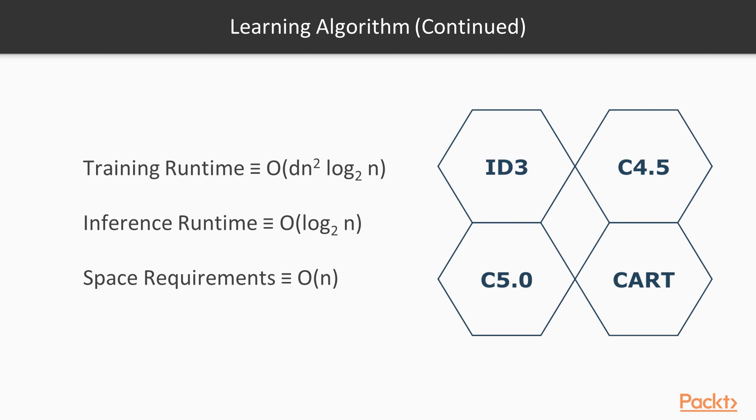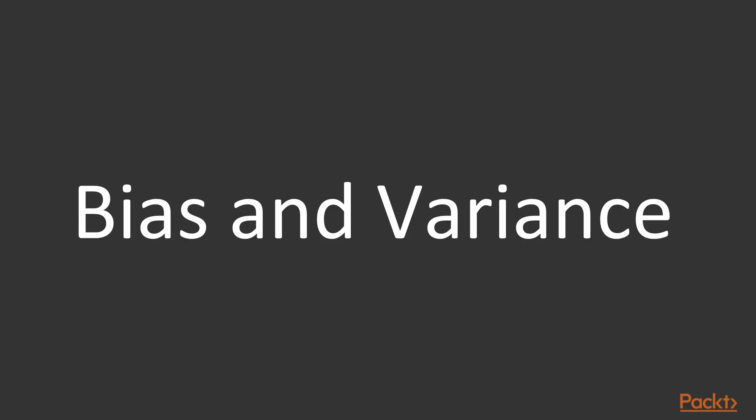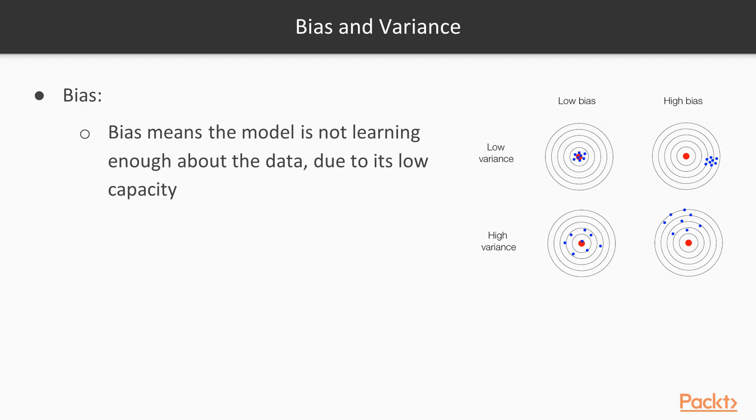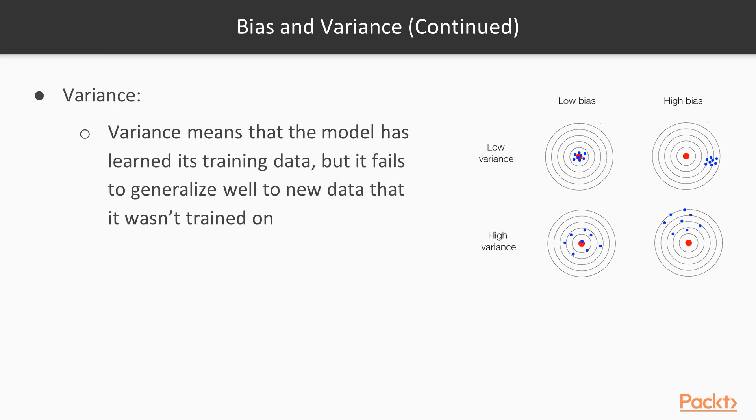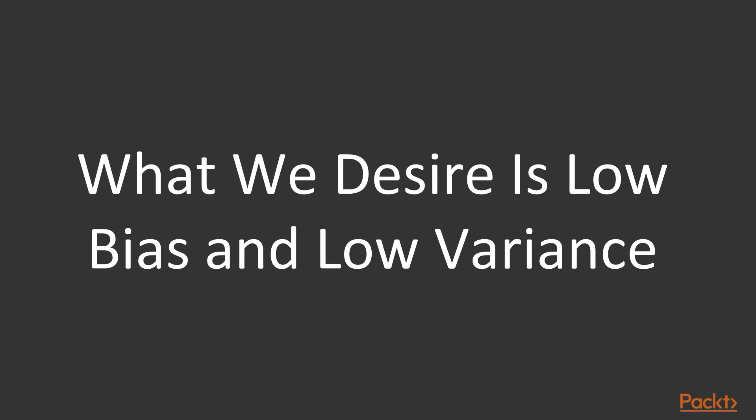Let's continue our discussion of bias and variance. Bias means that the model is not learning enough about the data due to its low capacity, so we usually solve the problem by increasing the model capacity, size, and parameters. Bias also means that the model fails on the training data. Bias is another word for underfitting. Variance, on the other hand, means that the model has learned its training data very well but it fails, however, to generalize well to new data that it wasn't trained on. Variance is another word for overfitting. What we desire is low bias and low variance.